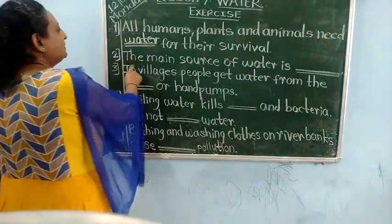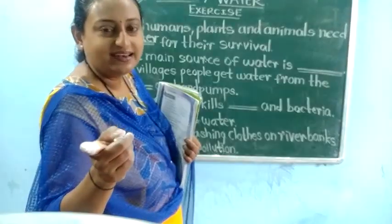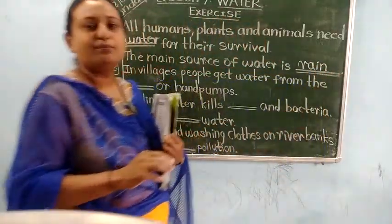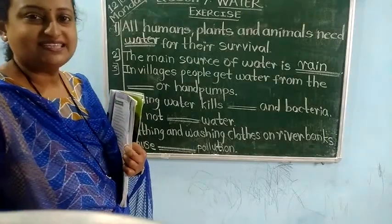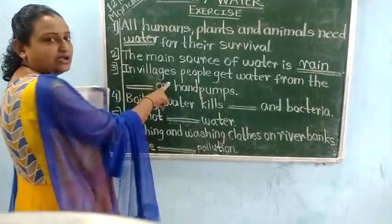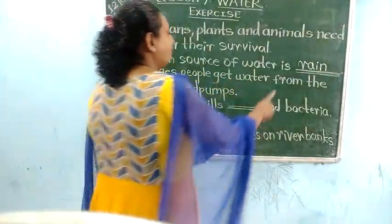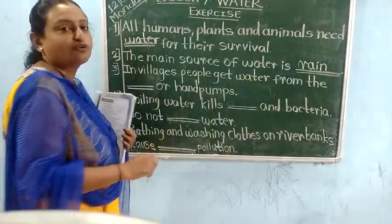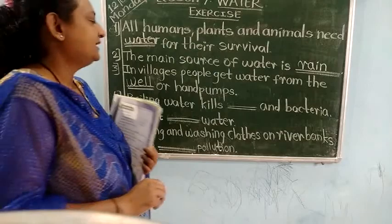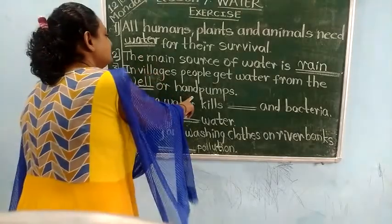The main source of water — you know it very well — is rain. Rain is the main source of water. In villages, people get water from wells and hand pumps.